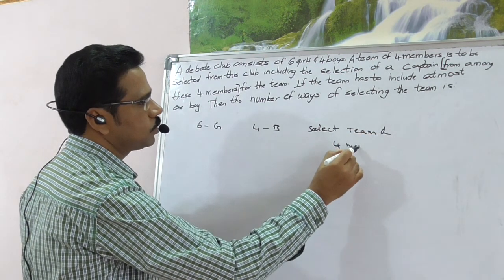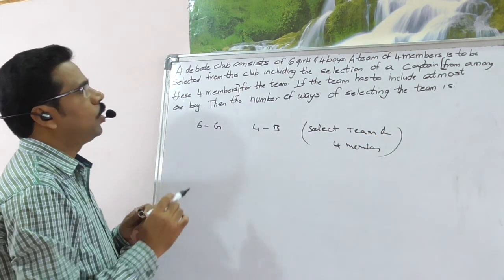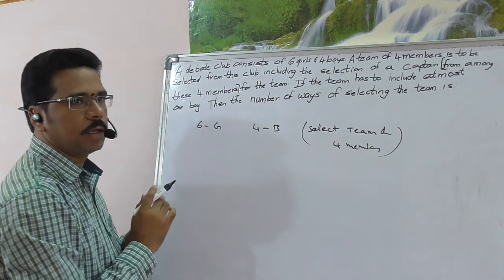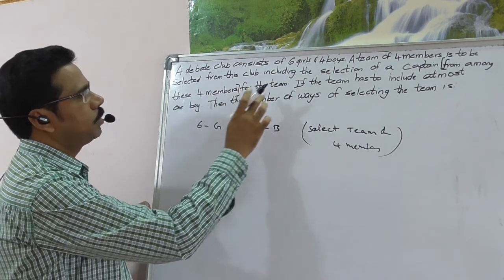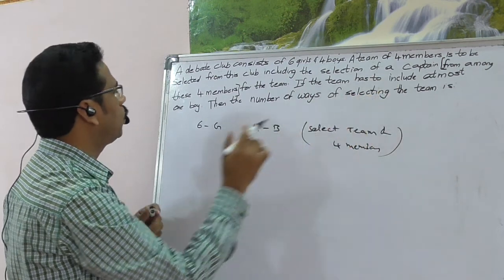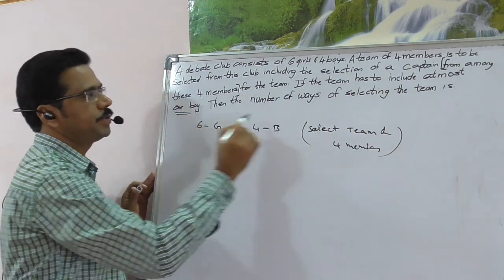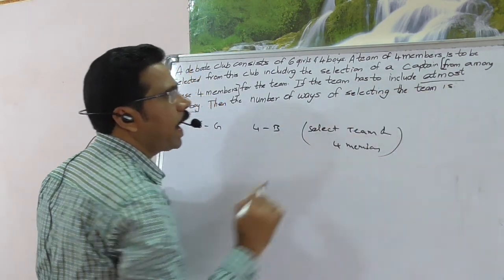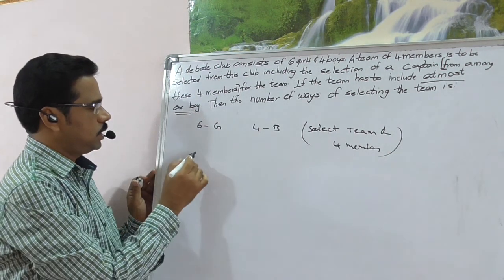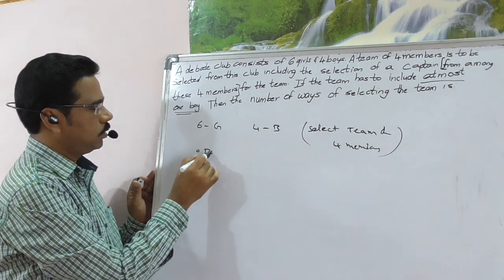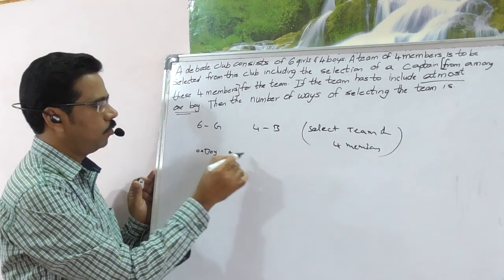Very, very simplest question this is. So, including the selection of a captain from among the 4 members for the team. If the team has to include at most 1 boy, this is the main condition here. We have to include at most 1 boy. So, that is either 0 boy or 1 boy.